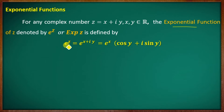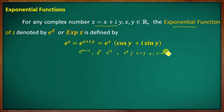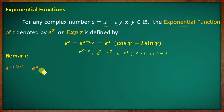Here, e raised to z — replacing z with x plus iy — gives us e raised to x plus iy. This equals e raised to x into e raised to iy, which equals e raised to x. Then e raised to iy equals e raised to z.